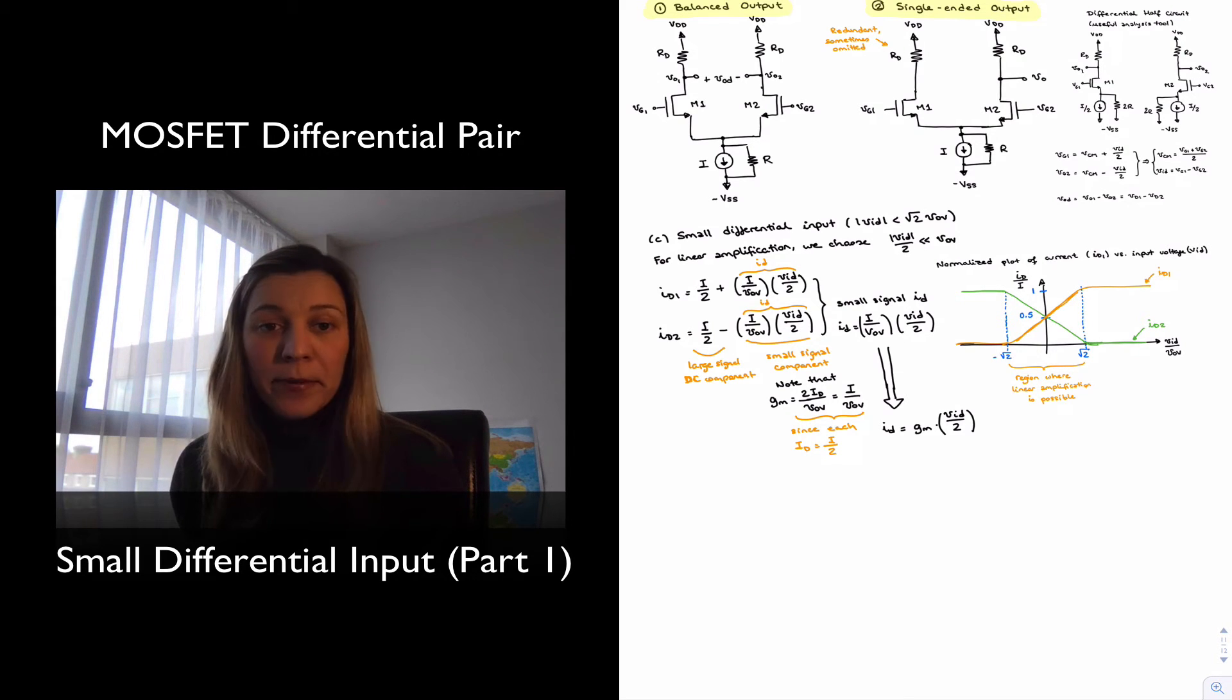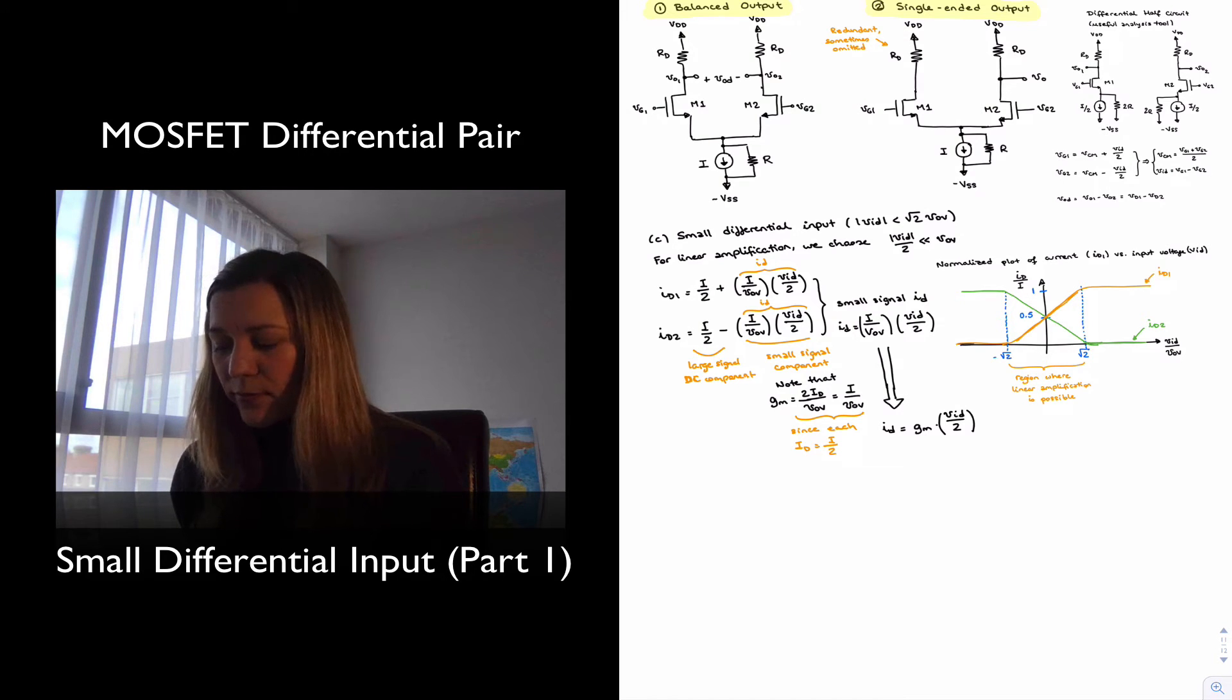Take a look at the expression for GM. And you can see GM is dependent on the tail currents, but also the overdrive voltage. And GM, you can see is the relationship between is the gain term, the transconductance term's relationship between output current and input voltage, ID and VAD halves. And so we can see that if we increase our transconductance, excuse me, if we decrease our transconductance, which is essentially the gain term, we will increase our linear range. Or in other words, if we increase our overdrive voltage, we will be increasing our linear range of operation.